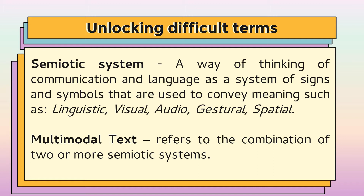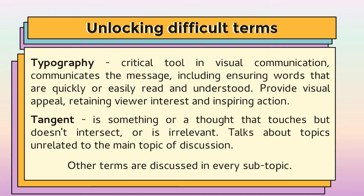Multimodal Text refers to the combination of two or more semiotic systems. Typography is a critical tool in visual communication that communicates the message, including ensuring words are quickly or easily read and understood, providing visual appeal, retaining viewer interest, and inspiring action.